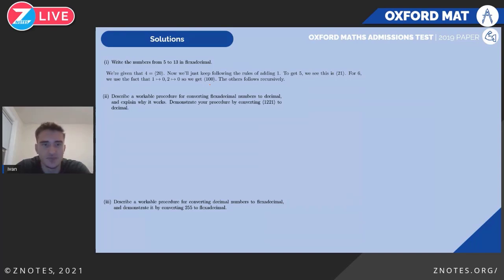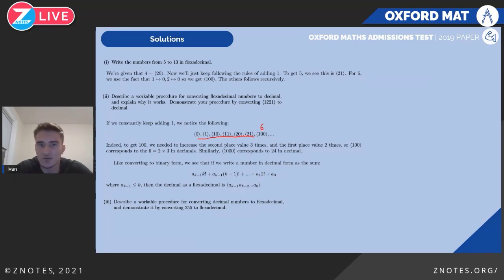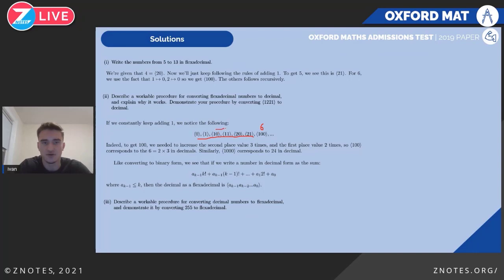Part two asks us to find a workable procedure for converting flexidecimals to decimals and explain why it works. When we keep adding one we notice that two-one, when you add one, gives one-zero-zero, which corresponds to six. To get to six we needed to go through two lots of the right-most one-zero cycle — two times three lots of these zero-one pairs in the rightmost expressions.